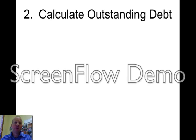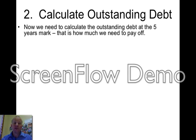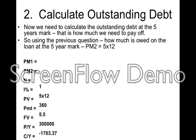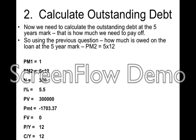Now, the thing is, the loan has been going for the time when you get your $10,000. So we need to work out how much you owe after the five years. That's using PM1 and PM2 again, which we've done before. PM1 is 1, PM2 is 5 times 12 — that's 60 months, which is the original term of the loan. I is 5.5, your PV is $300,000, and your PMT is $1,703.37, which comes from the question before.